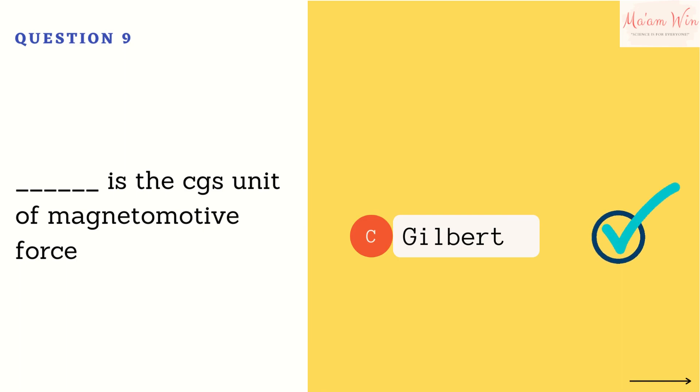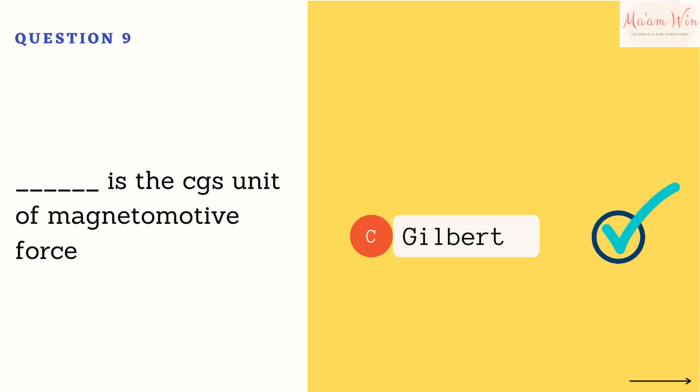Let's check your answer. The right answer is letter C, Gilbert. Gilbert is the CGS — centimeter gram second — unit of magnetomotive force. The MKS, which means meter kilogram second, has a unit of magnetomotive force of ampere turn.